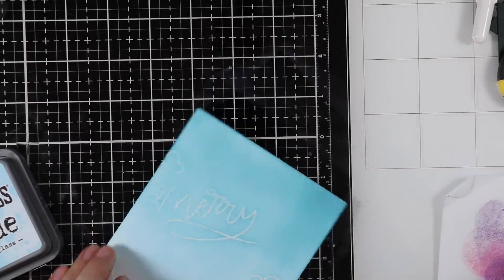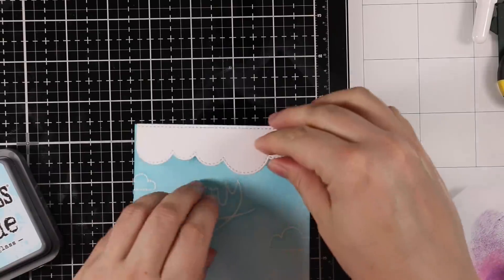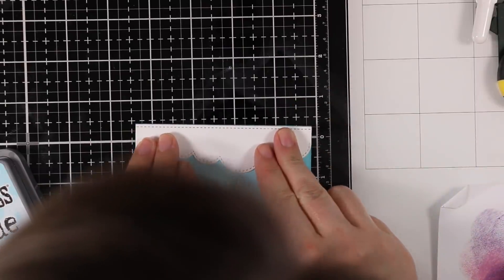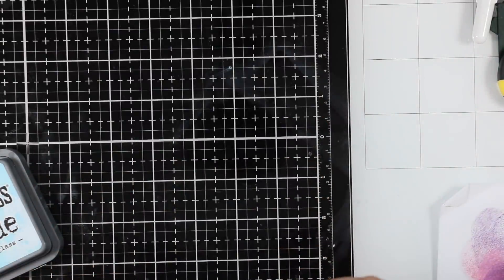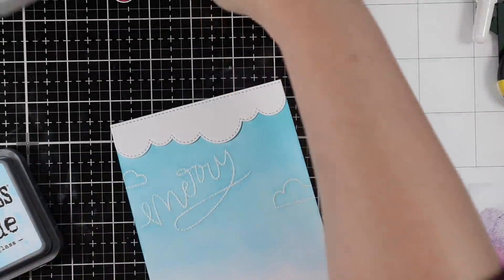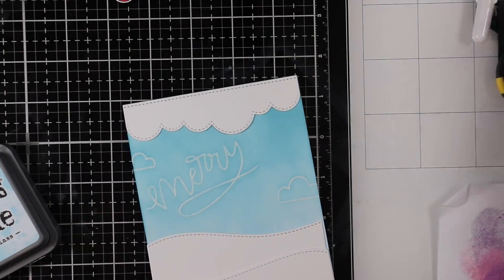If I was to do this again, I would either do a blue card base or I would do my ink blending first, then stamp the sentiments and clouds and emboss them after everything's dry. This still works, I just have learned now from experience.